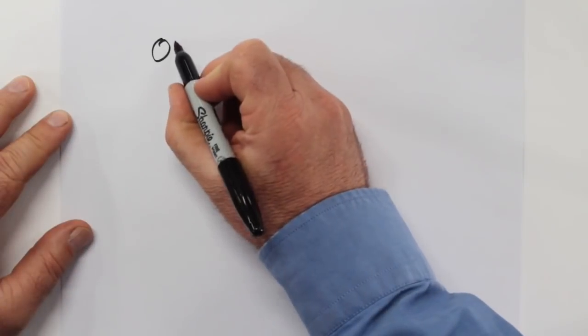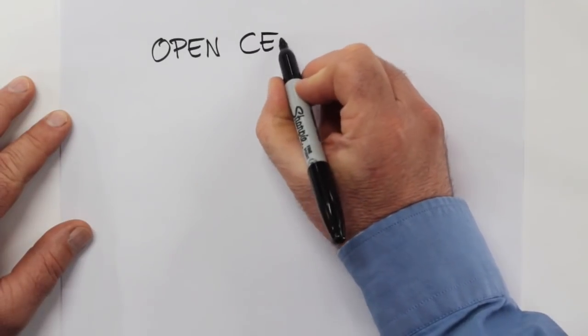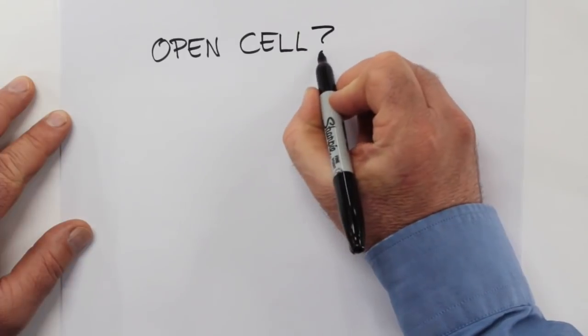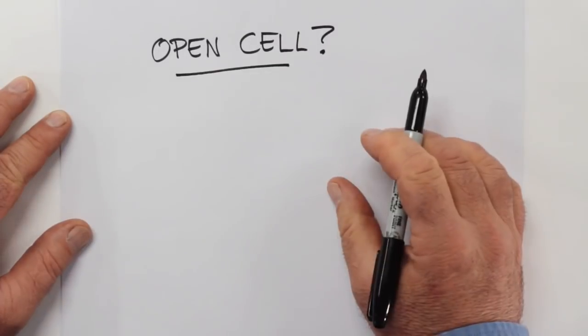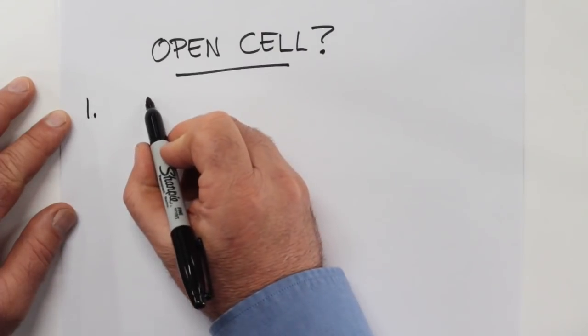If you've spent much time researching the difference between open and closed cell insulation on the internet, you may have discovered something that I have, and that's there's not a whole lot of recommended uses for open cell. So when exactly would you use this stuff?